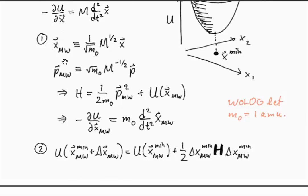We have the mass-weighted Cartesian coordinates are just 1 over the square root of some reference mass. It doesn't matter what we choose for that reference mass. Without loss of generality, we can choose a mass of one atomic mass unit. And then we multiply by the square root of our mass matrix times the original Cartesian coordinate. The corresponding momentum variable now has to be the square root of the arbitrary mass times m to the minus one-half times the original momentum variable.